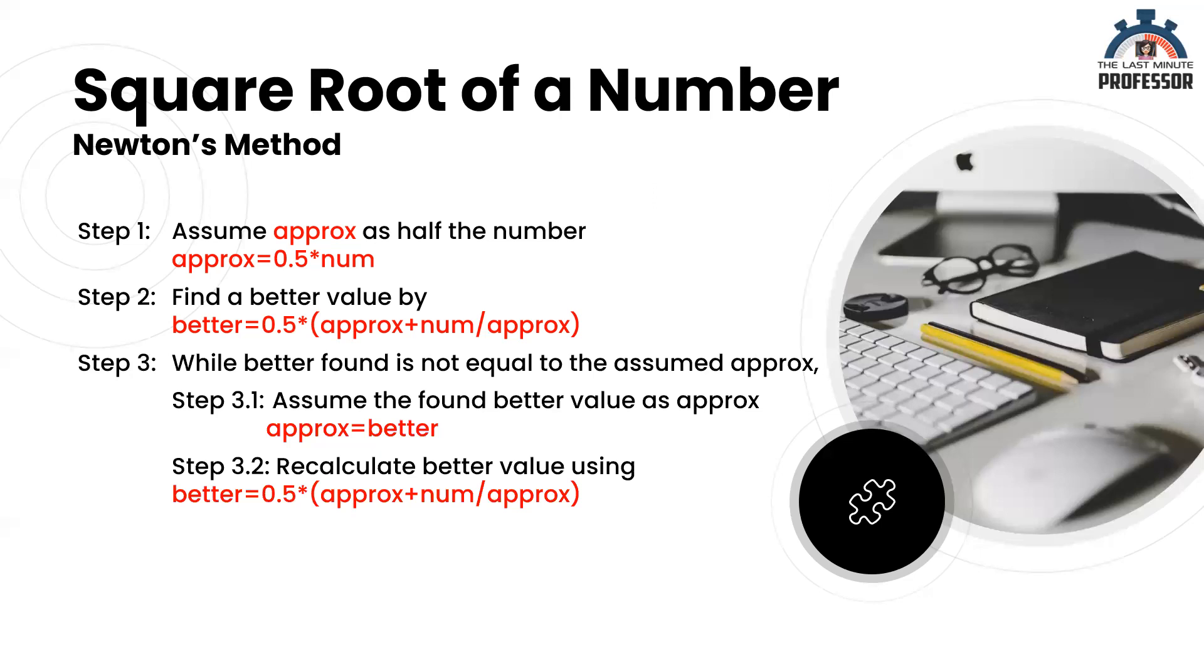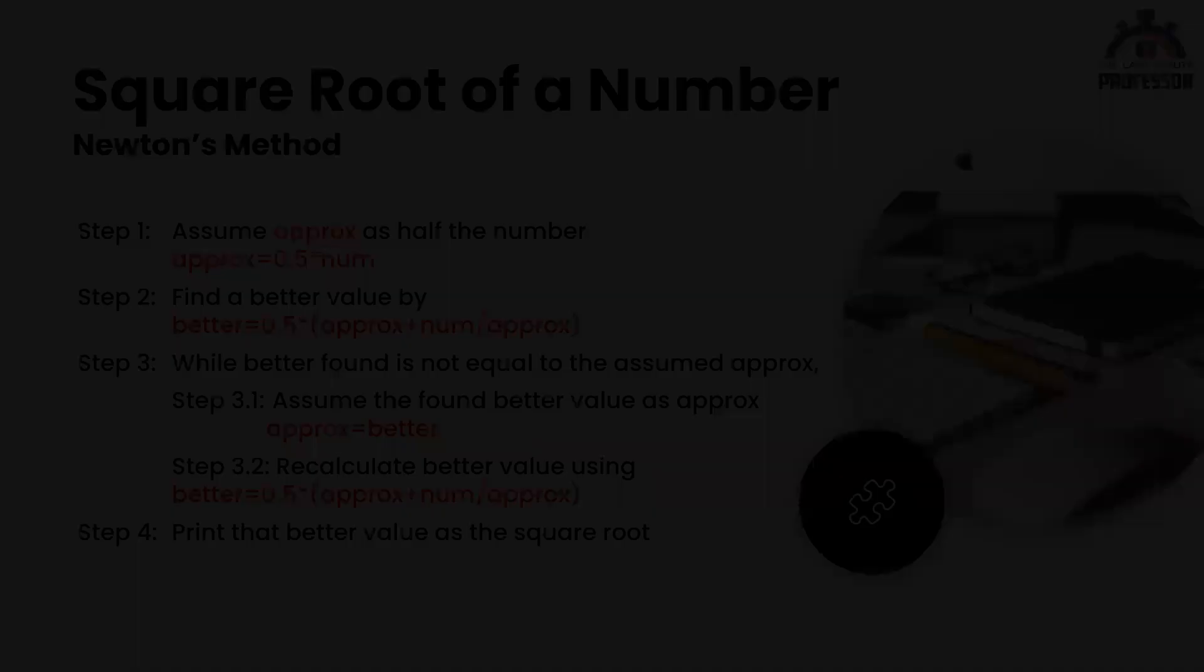When we stop this process by the end of step 3, that is 3.1 and 3.2, we will stop the process when the value of better becomes equal to the assumed approximate value and that value is the square root of the number given by user. We can print either better value or approximate value because by the end of step 3 both are going to be equal. This is our logic.